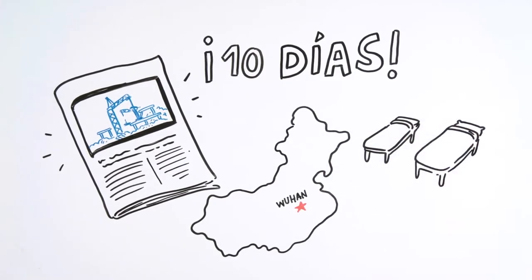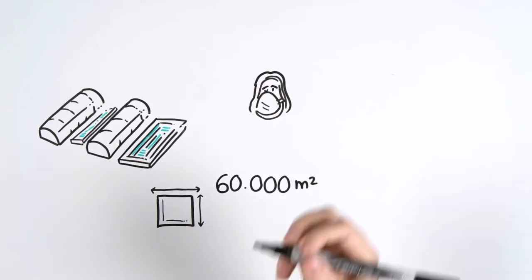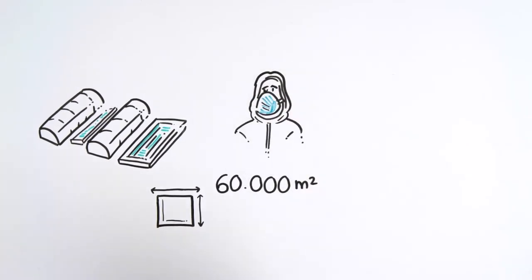The hospital has stories that can accommodate around 1,000 patients. The land that the hospital occupies covers 60,000 square meters. The building also has isolation areas and 30 intensive care units.